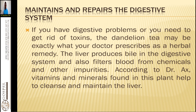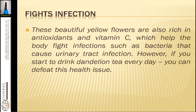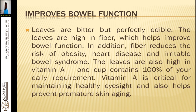Dandelion maintains and repairs the digestive system. If you have digestive problems or need to rid yourself of toxins, dandelion tea may be exactly what you need. The liver produces bile in the digestive system and filters blood from chemicals and impurities. Dandelion is a cholagogue — a bile-increasing herb — that helps the bile duct produce bile and flow into the duodenal walls. Its beautiful yellow flowers are rich in antioxidants and vitamin C, helping the body fight infections such as bacteria that cause urinary tract infections.